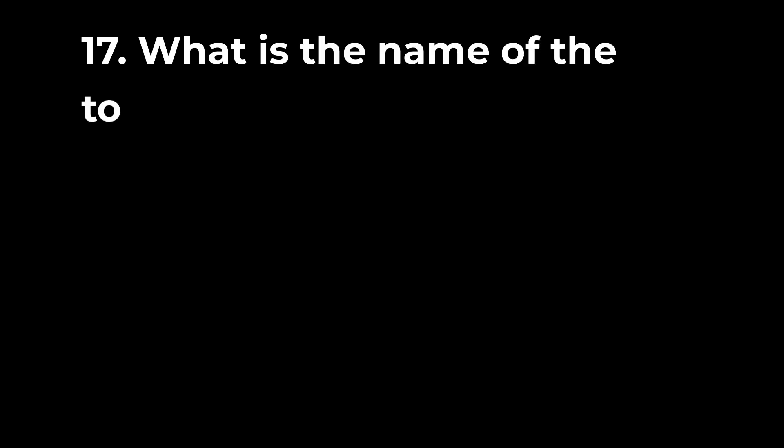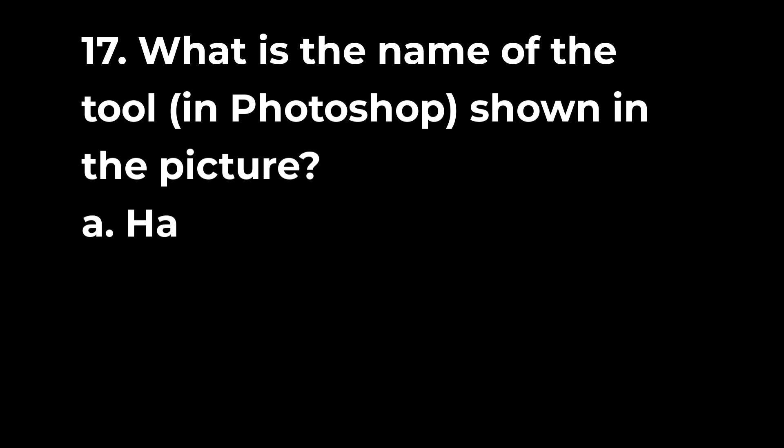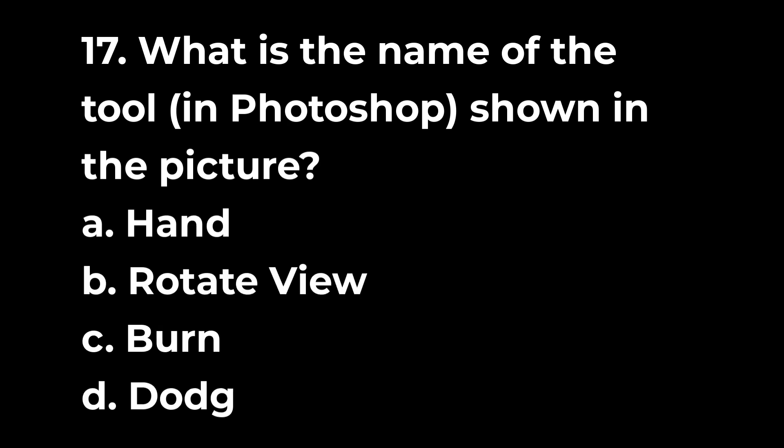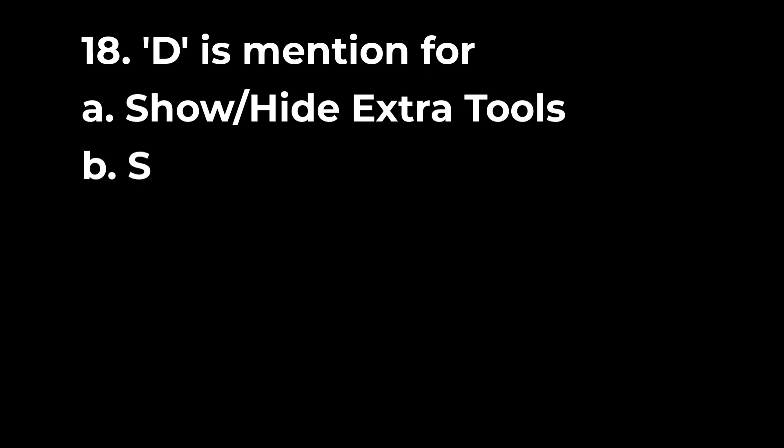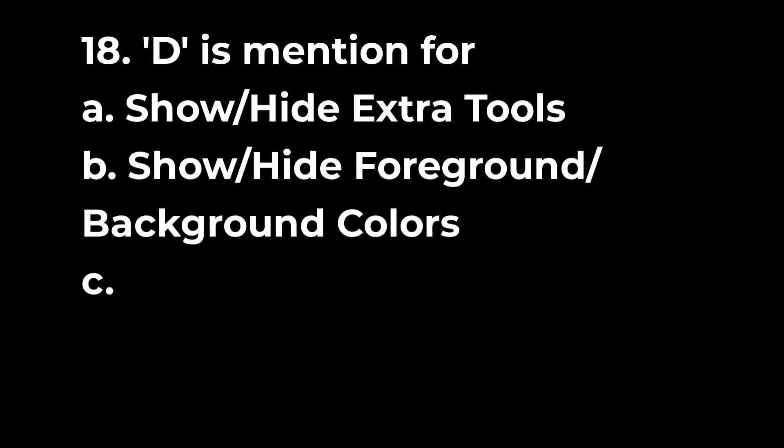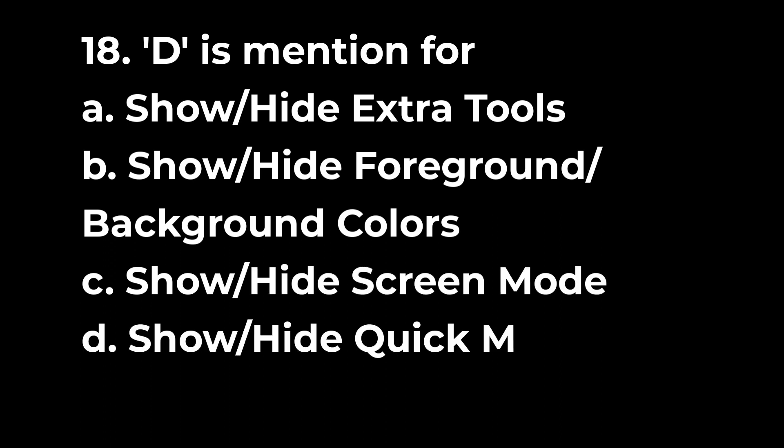Question 17: What is the name of the tool, in photoshop, shown in the picture? a. Hand b. Rotate view c. Burn d. Dodge. Question 18: Dismention for a. Show/hide extra tools b. Show/hide foreground/background colors c. Show/hide screen mode d. Show/hide quick mask mode.